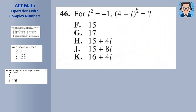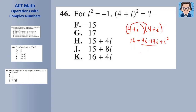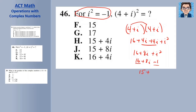The second problem is (4 plus i) squared. Let's write that as (4 plus i) times (4 plus i) and multiply out by FOIL: 16 plus 4i plus 4i plus i squared. Combining like terms, 4i and 4i is 8i. Since i squared equals negative 1, we replace it and get 16 plus 8i minus 1. Combining the real parts, 16 minus 1 is 15, giving us 15 plus 8i, which matches the answer.